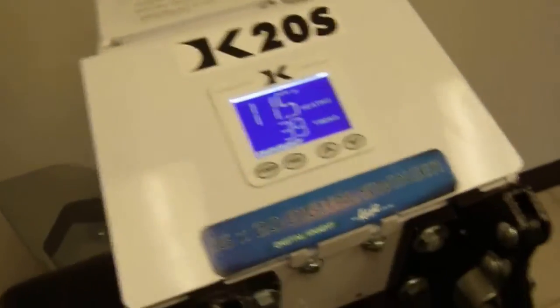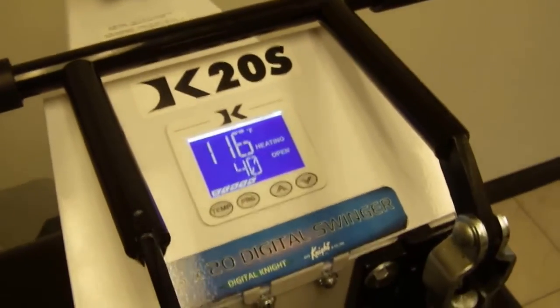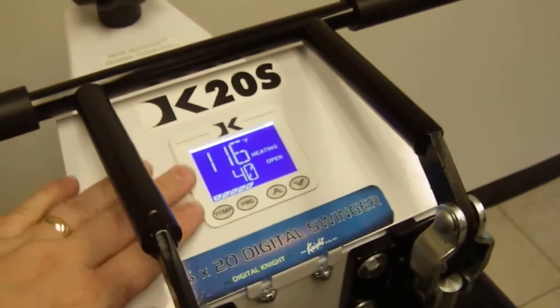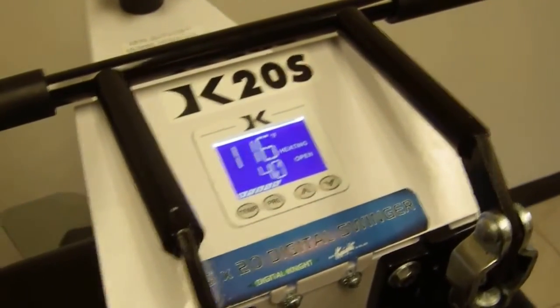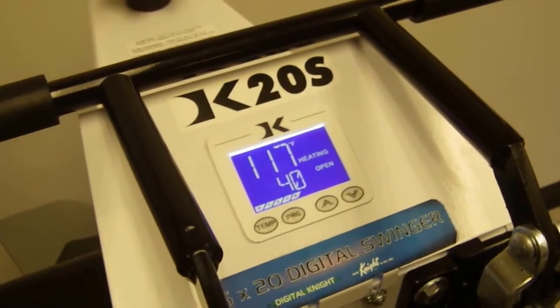If it's counting down backwards, which means when you close the press it says open and when you open the press it says timing, that means you have to reprogram the controller. The controller can be reprogrammed. We have instructions for that. You can just email us or look on our support page for the model programming instructions.